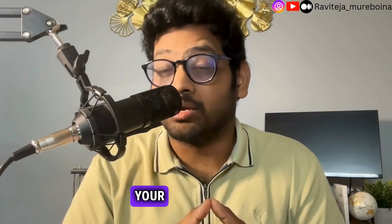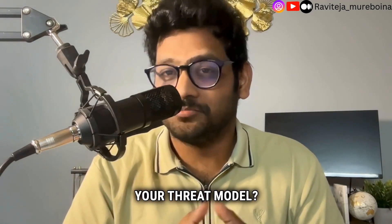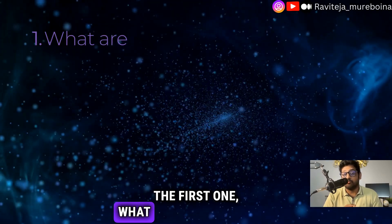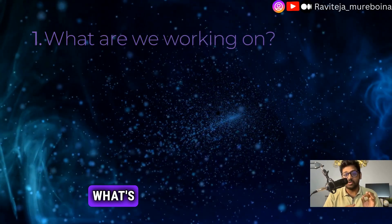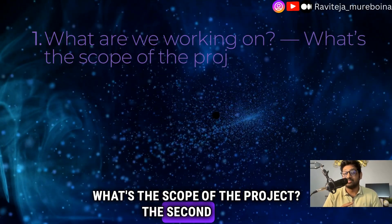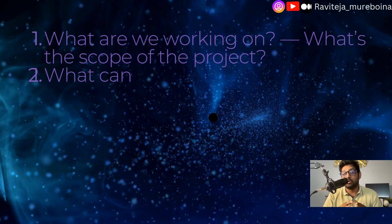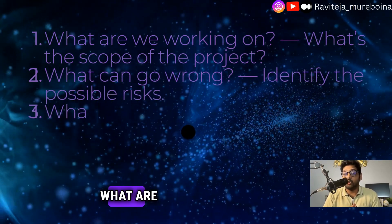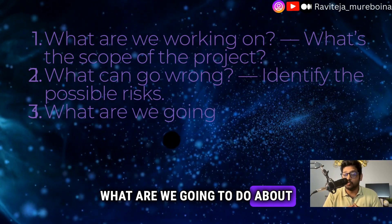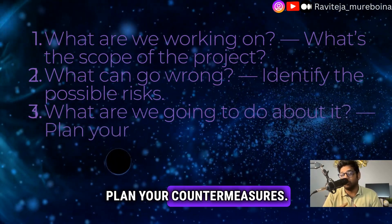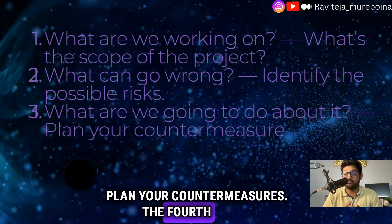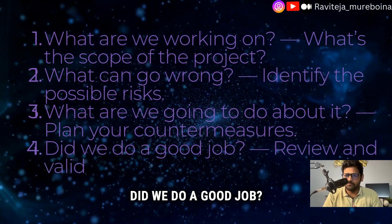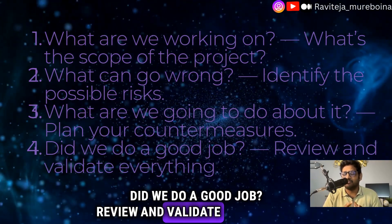Want an easy way to organize your threat model? Try the four questions framework. First: what are we working on — what's the scope of the project? Second: what can go wrong — identify the possible risks. Third: what are we going to do about it — plan your countermeasures. Fourth: did we do a good job — review and validate everything.